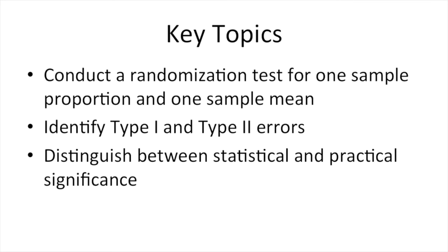These are the key topics we're going to cover this week. First, you're going to conduct a randomization test for one sample proportion and one sample mean. You'll learn how to do this in both StatKey and Minitab Express. Then at the end of this lesson, you'll learn how to identify type one and type two errors in hypothesis testing and distinguish between statistical and practical significance.